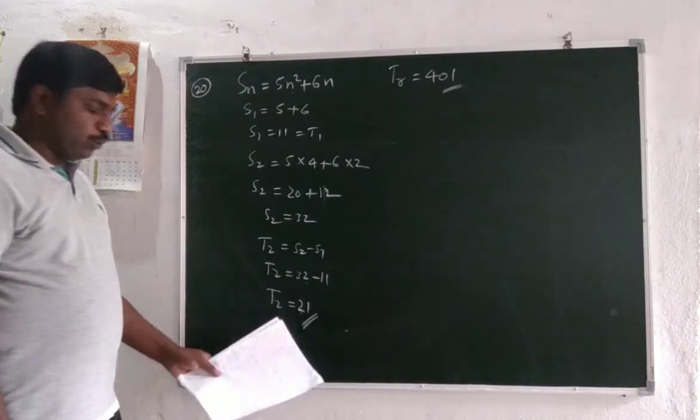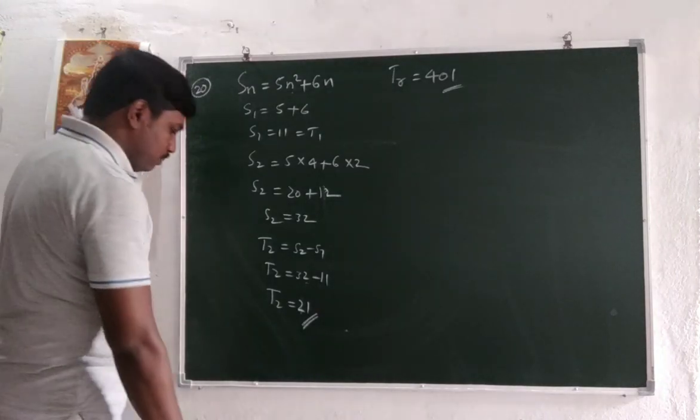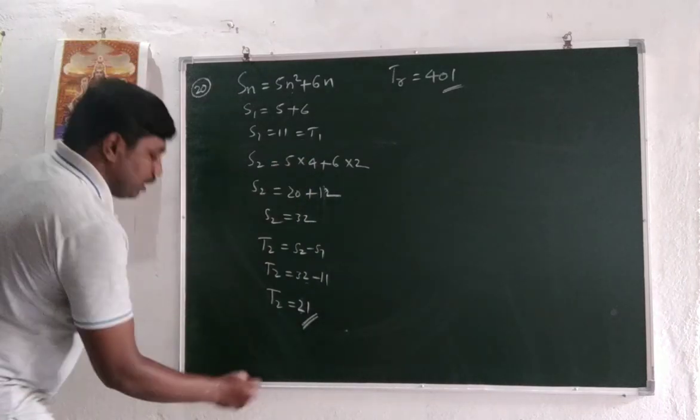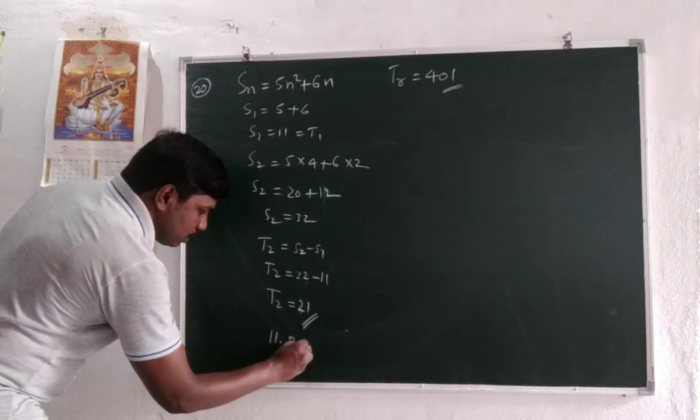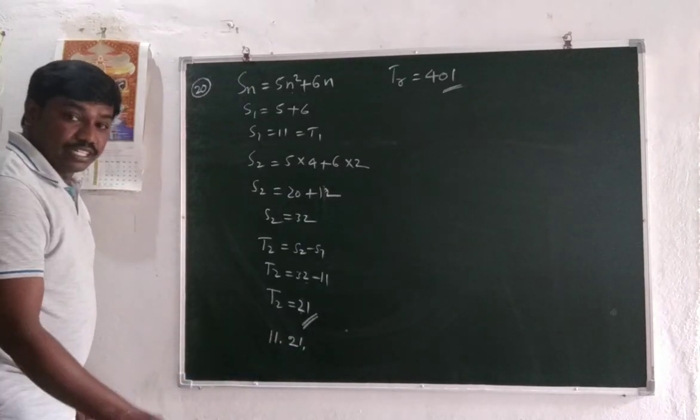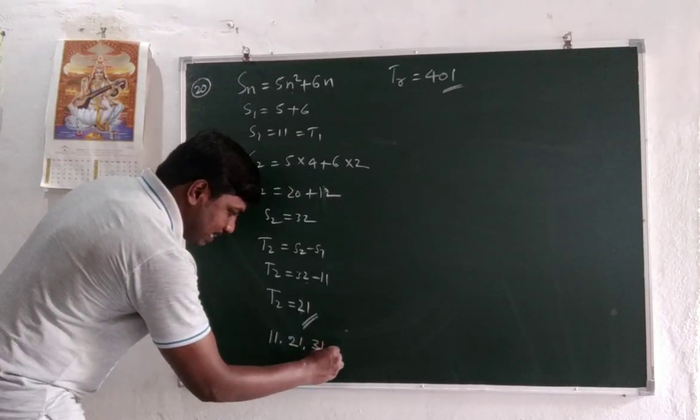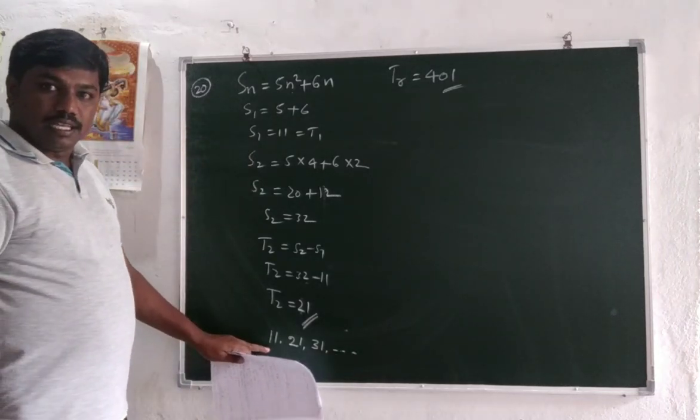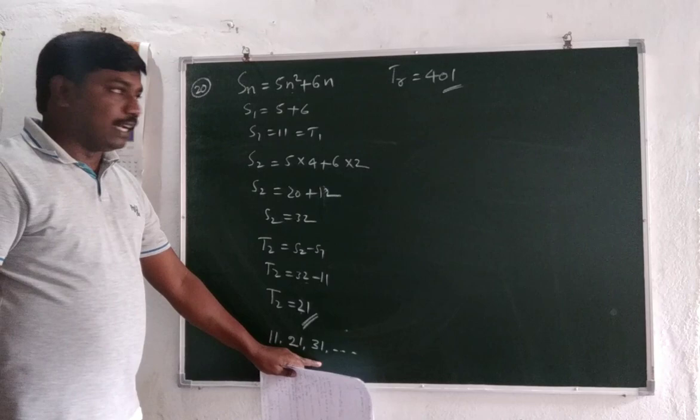So T2 is 21. The terms of sequence are T1, T2 - 11, 21. What is the difference between 11 and 21? 10. And then next is T3 which is 31 like this. So this is the sequence, an AP sequence.